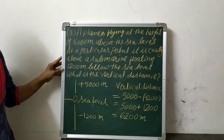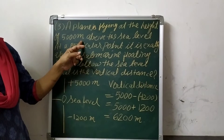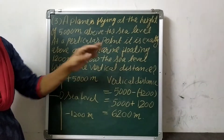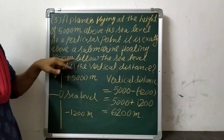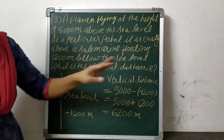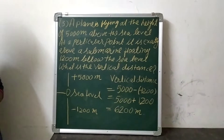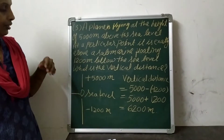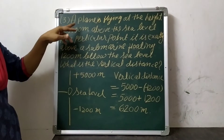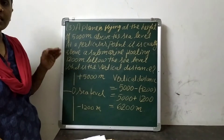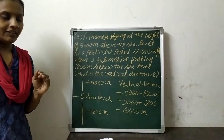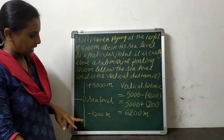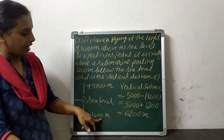Our third problem is like this. A plane is flying at the height of 5000 meters above sea level. At a particular point, it is exactly above a submarine floating 1200 meters below sea level. What is the vertical distance between the plane and the submarine? To solve this problem, first we will assume sea level as zero point. When we go above sea level, the distance of the plane we will represent as a positive integer — plus 5000 meters. When we go below sea level, the distance of the submarine we will represent by negative integers — minus 1200 meters.